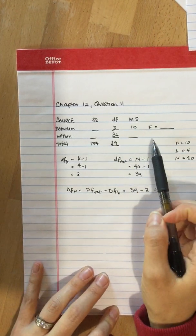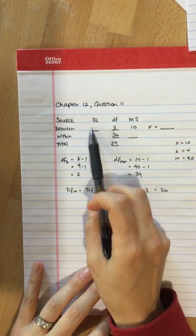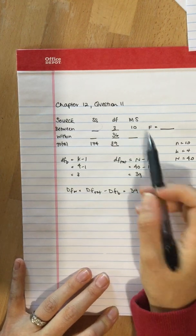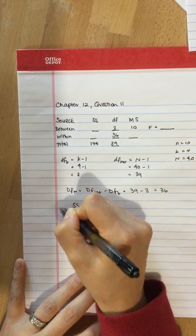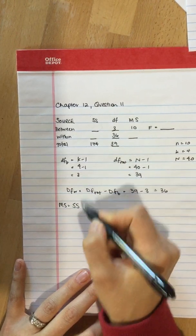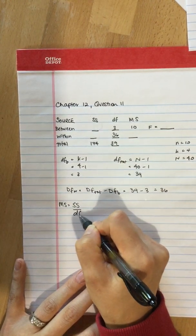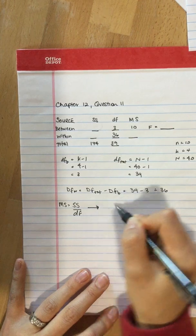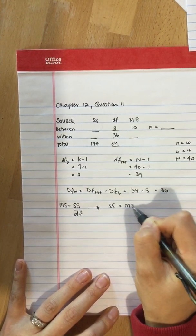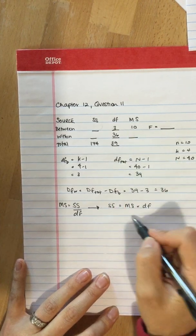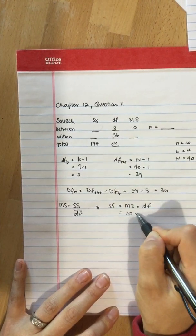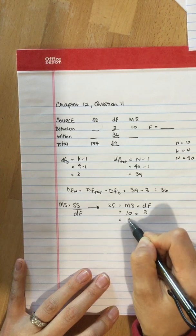From there, our next step, we can calculate the sum of squares between because we have mean square and degrees of freedom. Mean square equals sum of squares divided by the degrees of freedom, which means that sum of squares is equal to the mean square times the degrees of freedom. We have those two values, so we have ten times three, which is equal to 30.